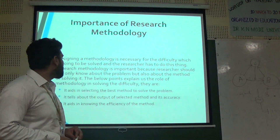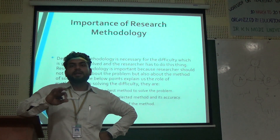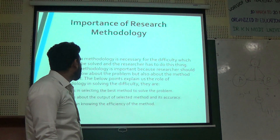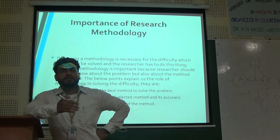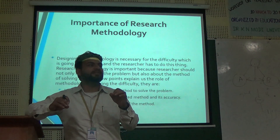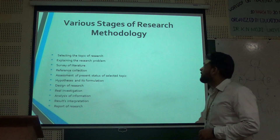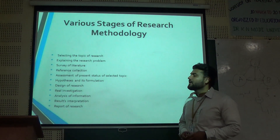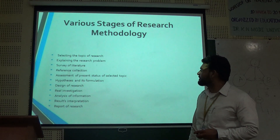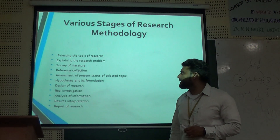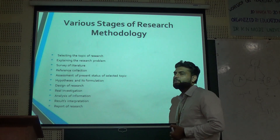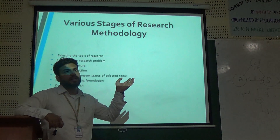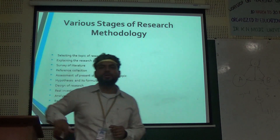It tells about the output of selected methods and their accuracy — that is, how accurate that particular technique is. Next, it aids in knowing the efficiency of the method — my effort, my technique, and my methodology, how effective they are and what the efficiency rate is. The various stages of research methodology are: selecting the topic, explaining the research problem, survey of research, reference collecting, assessment of present status, hypothesis formulation, design of research, real investigation, analysis of information, result interpretation, and report of result — from the start of research formulation to the final analysis.